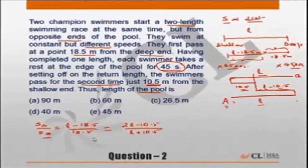So ratio of speed is equal to ratio of distance. Now this is a single equation, a single variable, and we can use this to get to an answer. So when we cross multiply, we will get L minus 18.5 into L plus 10.5 is equal to 2L minus 10.5 into 18.5. So we just cross multiply.